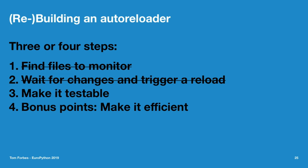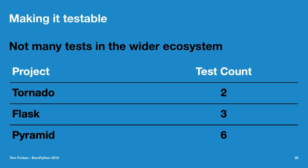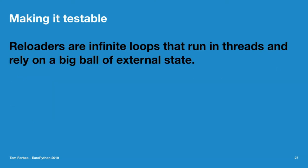How do we make it testable? When I was researching this talk I looked at other projects using an auto-reloader. Surprisingly, there aren't many tests in the wider ecosystem — Tornado has two, Flask has three, Pyramid has six. Most are high-level integration tests: spawn a process, touch a file, assert exit code 3. The point isn't to shame these projects — it's just a hard thing to test. An auto-reloader is generally an infinite loop running in threads, relying on a big ball of external state which is the file system.